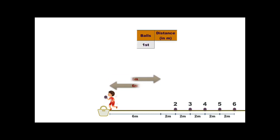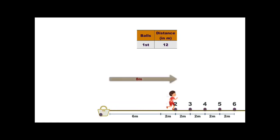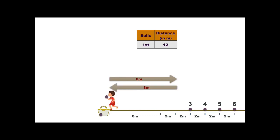Similarly, he goes for the second ball. This time he has to run 6 plus 2 = 8 meters and return to the starting point again 8 meters. So for the second ball, he has to run 16 meters.